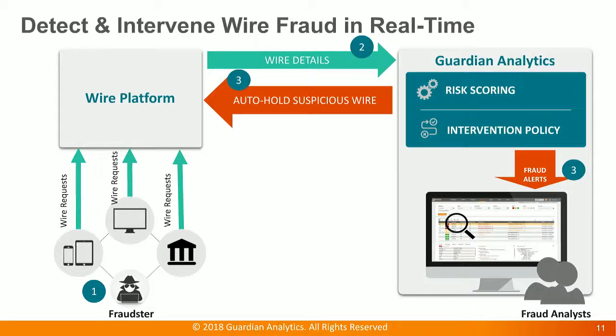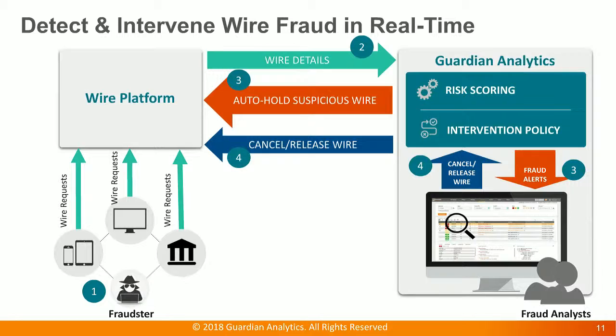We apply the intervention policy and in real time display fraud alerts to the fraud analyst in our risk application, simultaneously placing any suspicious wire on hold based on the customer-specified intervention policy. This gives the fraud analyst the time needed to investigate the suspicious wire, and based on their investigation or callback validation with the customer, they can cancel or release the wire — all within Guardian Analytics' risk application by clicking a button.